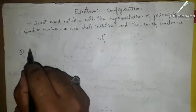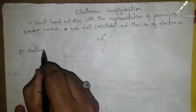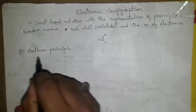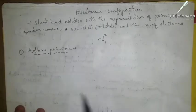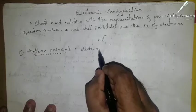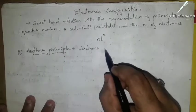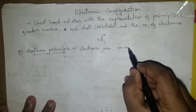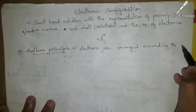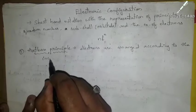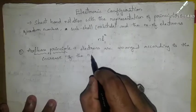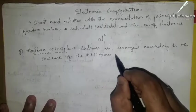The first principle is called the Aufbau principle. The Aufbau principle states that electrons are arranged according to the increasing order of the n plus l values, which we also call the energy levels.